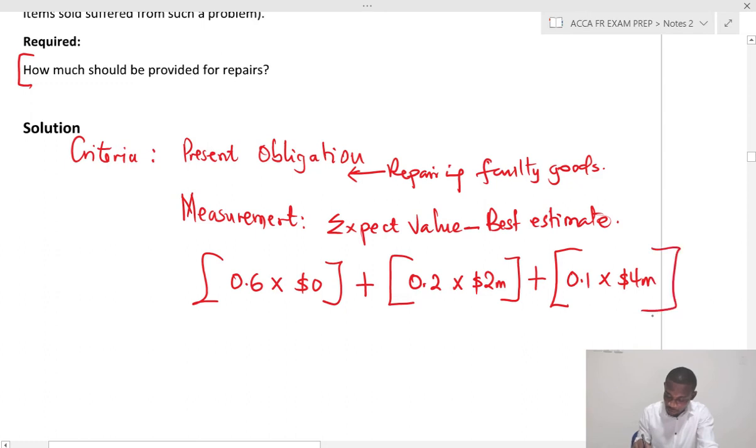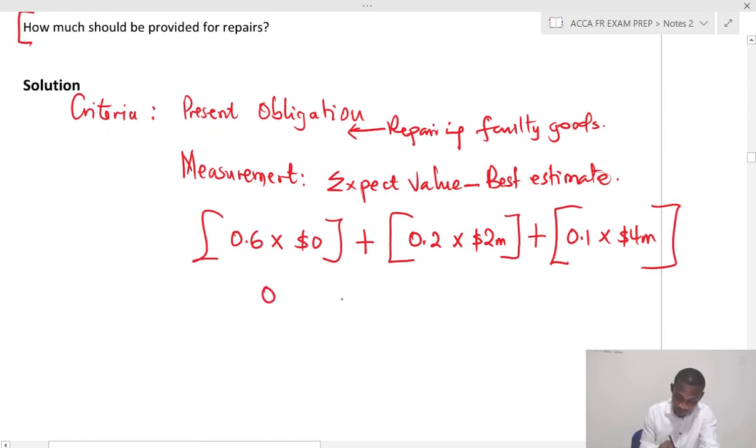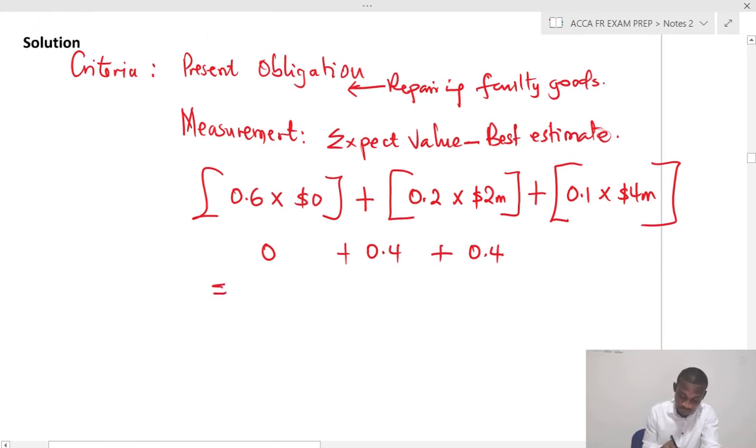So when we put all of these together, this of course is zero. So 2 times 0.2, that is 20% probability. So 2 times 0.2 will give us 0.4 million. Plus 4 times 0.1, that will give us also 0.4. Now it means that the total provision CBB should account for should be 0.8 million, which is 800,000.